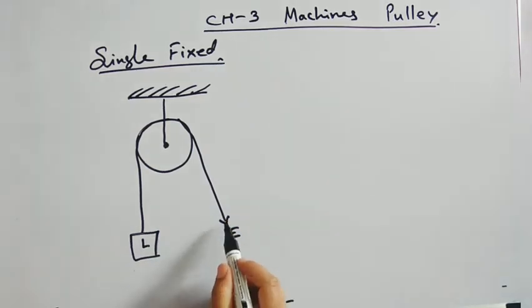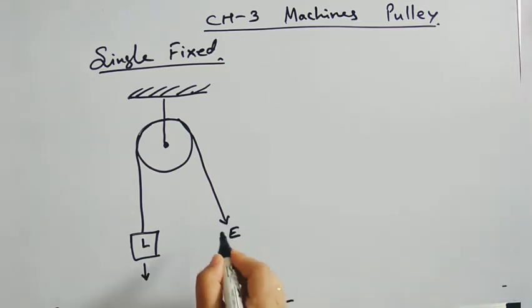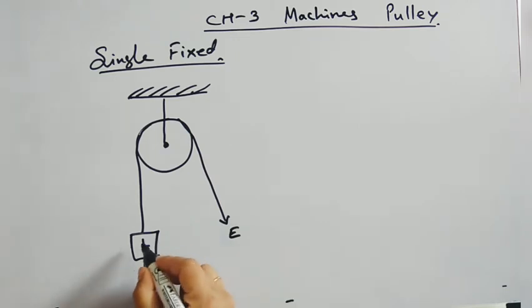So you apply effort on that side and load on this side. Load acts in downward direction, and in this case effort is also acting in downward direction. In single fixed pulley, effort acts in downward direction.